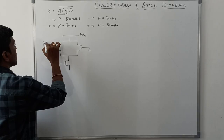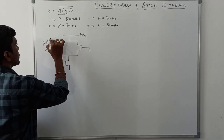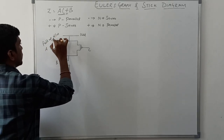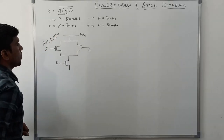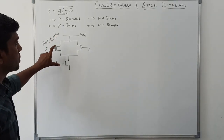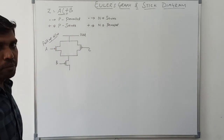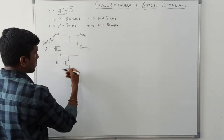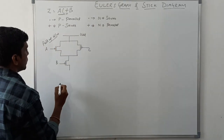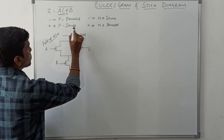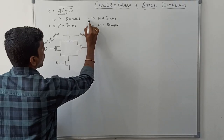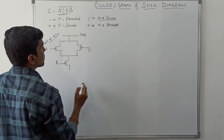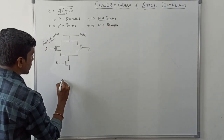So far I have drawn the pull-up network — this is called the pull-up network. The pull-up network only consists of PMOS transistors. Now coming to the pull-down network: in this pull-down network, a dot operator means NMOS transistors connecting in series.